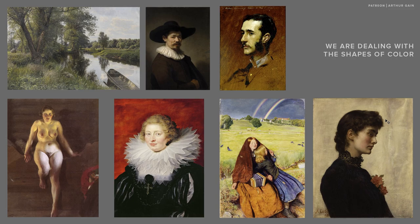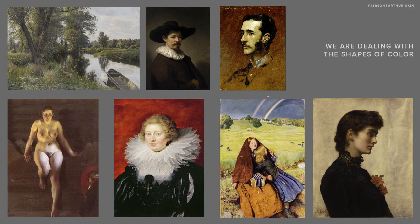Each painting we do, each picture we are creating, is an arrangement of shapes of colors — and this is a very important concept I would like you to focus on. We deal with a two-dimensional surface. We apply shapes of colors on the flat surface of our canvas or panel, and the best way to begin is to squint and to see our setup, our model or reference, as just a puzzle or mosaic of flat shapes. Each shape has four characteristics.